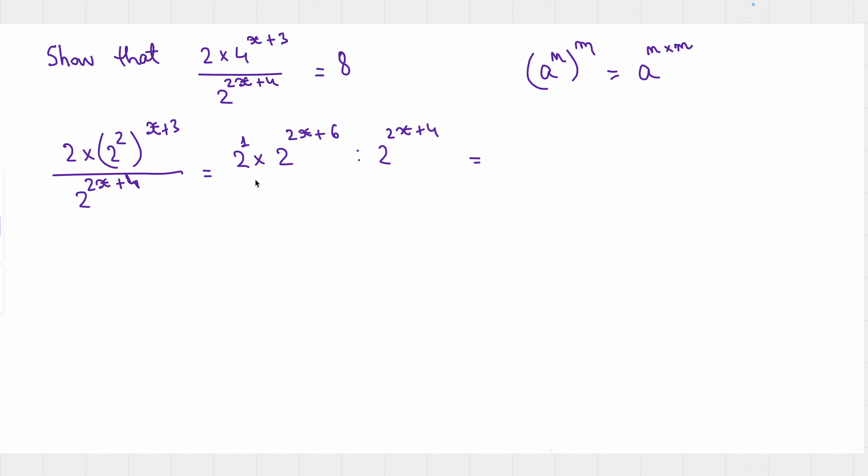And when we have multiplication, we do the addition of the powers. So 2 to the power 1 plus 2x plus 6. And when we have division, we subtract. So minus 2x minus 4.